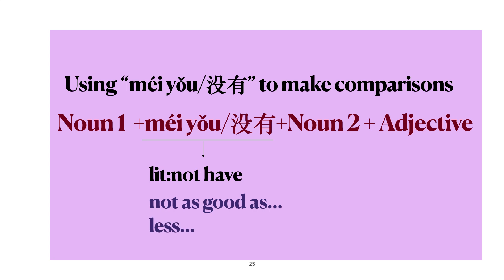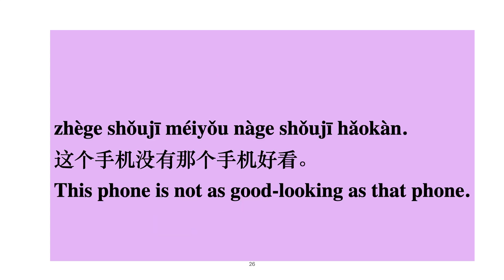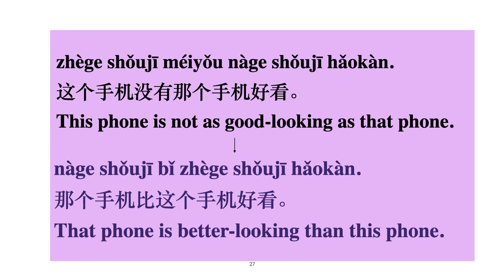For example: 这个手机没有那个手机好看 — This phone is not as good looking as that phone. Another way to say this sentence is: 那个手机比这个手机好看 — That phone is better looking than this phone.